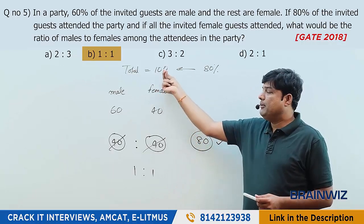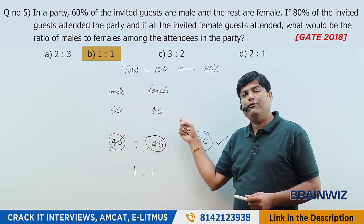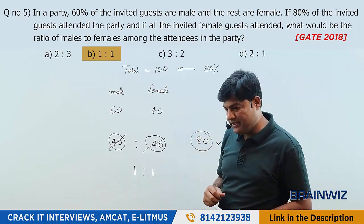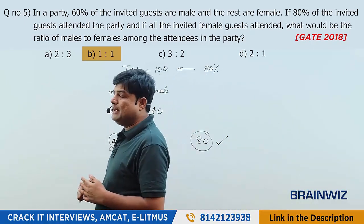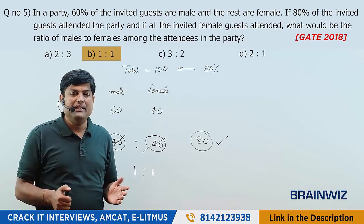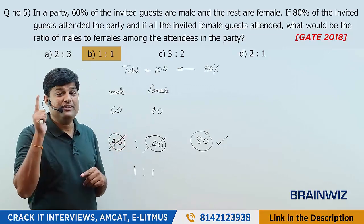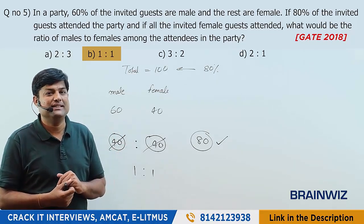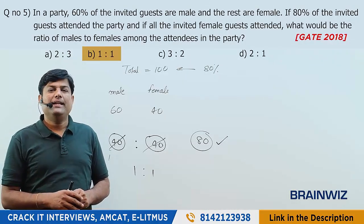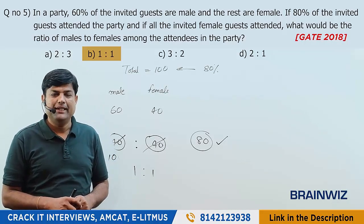With the 100% concept, we got 60 males and 40 females, making this a simple solution. Similar questions appear in election-based problems — where candidate A vs candidate B scenarios are given. We'll cover those election questions in the next video. Keep practicing and share our videos. Thank you very much.